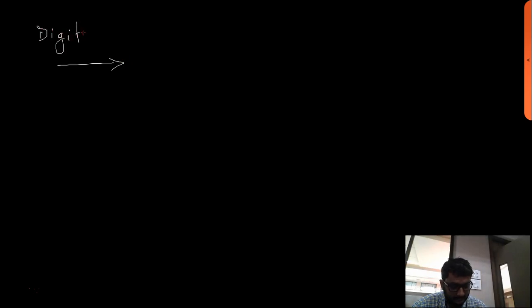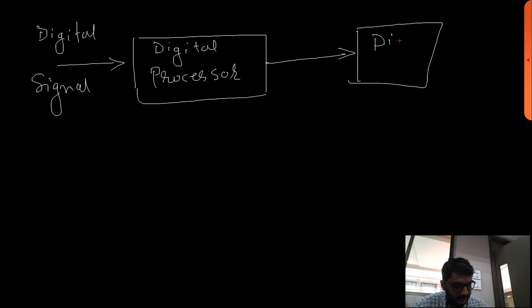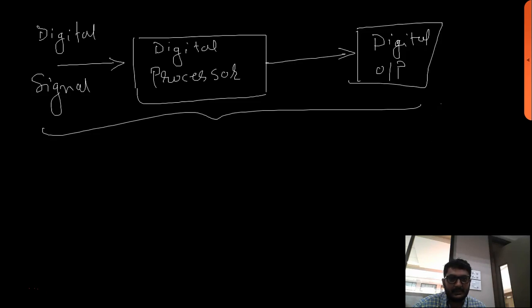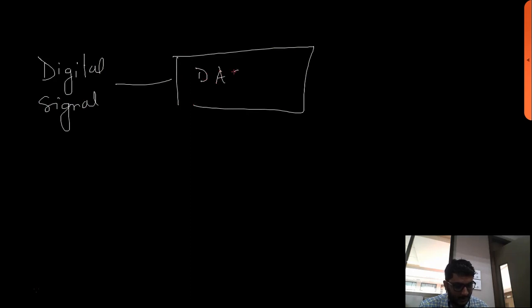After getting a digital signal, we are going to process it. This will be a digital processor, and we are going to get a digital output. This is the internal block of the digital processor. Now this digital signal has to be converted back into an analog signal so that we can feed it to other systems like a speaker. To do that, this digital signal has to go through a digital-to-analog converter, and the output will be an analog signal.